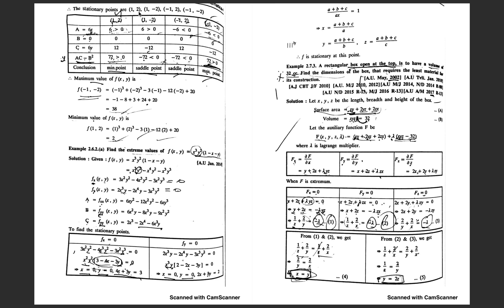Substituting each point into the a, b, c expressions: for (1, 2), a = 6, c = 12, and Δ = ac - b² = 72. Since Δ > 0 and a > 0, the point (1, 2) is a minimum point.